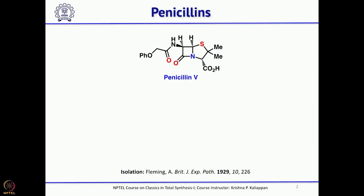Good morning everyone and welcome back to this NPTEL lecture series on Classics in Total Synthesis part 1. We have been discussing 3-membered ring containing natural products and their total synthesis, and recently we started discussing 4-membered ring natural products. We just completed the discussion on the synthesis of cubane. Now we will move to some interesting naturally occurring compounds, and when we talk about 4-membered rings, immediately one natural product that should come to mind is penicillin.